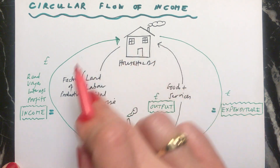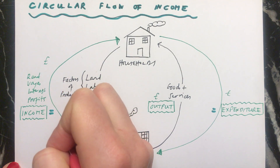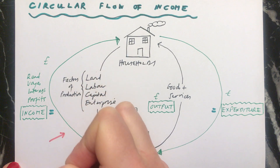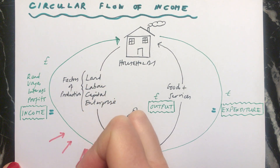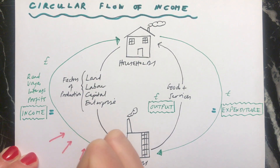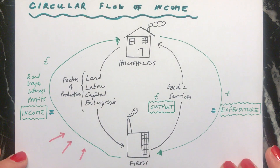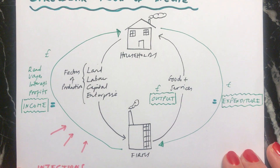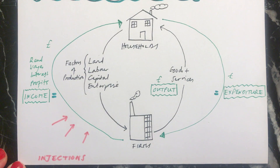The money is flowing round, but also more money can be added in, and there are three ways in which money can be added in. These are called injections — they're being injected into the economy, and there are three of those.